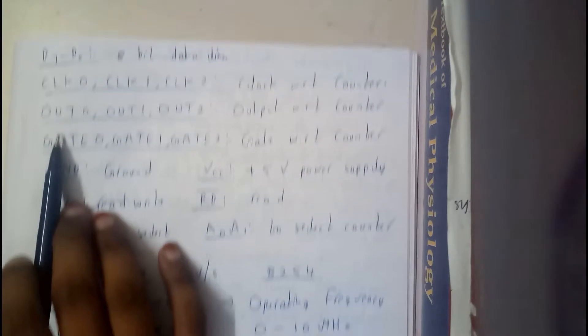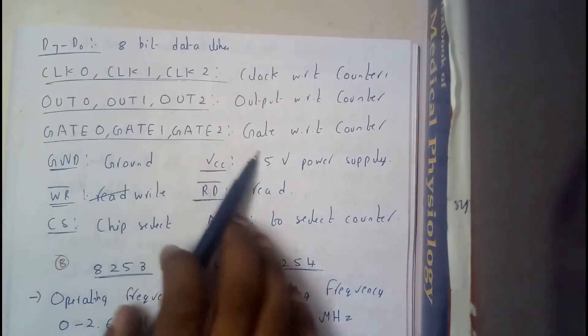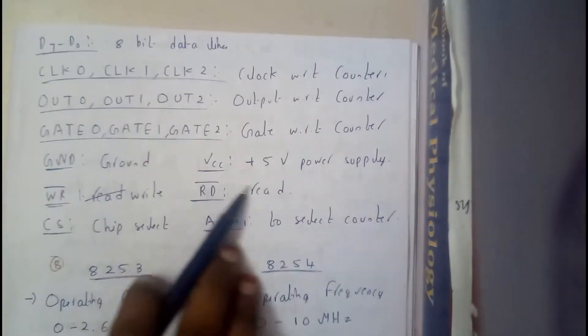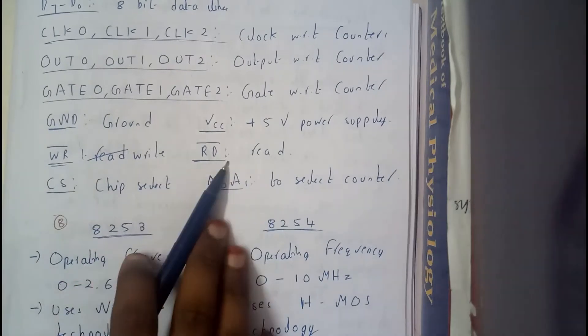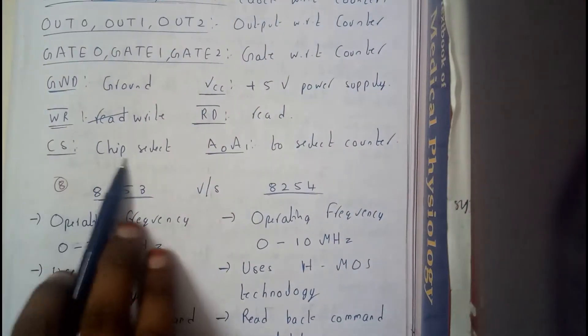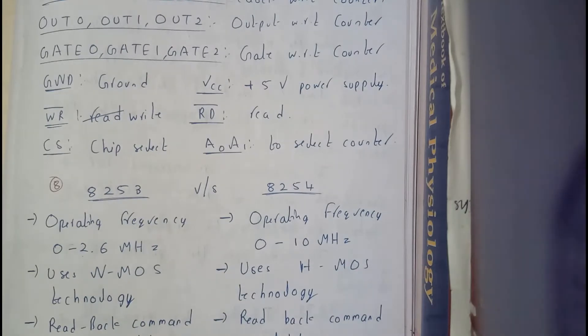So D7 to D0 are nothing but 8 bit data. Clock 0 means indicates clock with respect to their counters. Output 012 indicates the output with respect to their things. Gate 0123 indicates their gates. GND is nothing but ground, VCC is plus 5V power supply. WR is nothing but for write, RD bar is for read. CS is nothing but chip select. A0 and A1 are the addresses to select the counter.